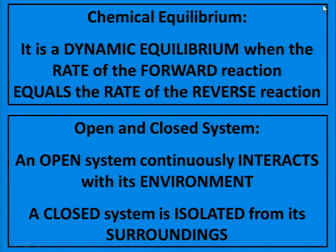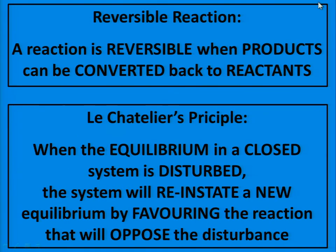Chemical equilibrium is a dynamic equilibrium when the rate of the forward reaction equals the rate of the reverse reaction. Open and closed systems: an open system continuously interacts with its environment; a closed system is isolated from its surroundings. A reaction is reversible when products can be converted back to reactants. Le Chatelier's principle: when the equilibrium in a closed system is disturbed, the system will reinstate a new equilibrium by favoring the reaction that will oppose the disturbance.